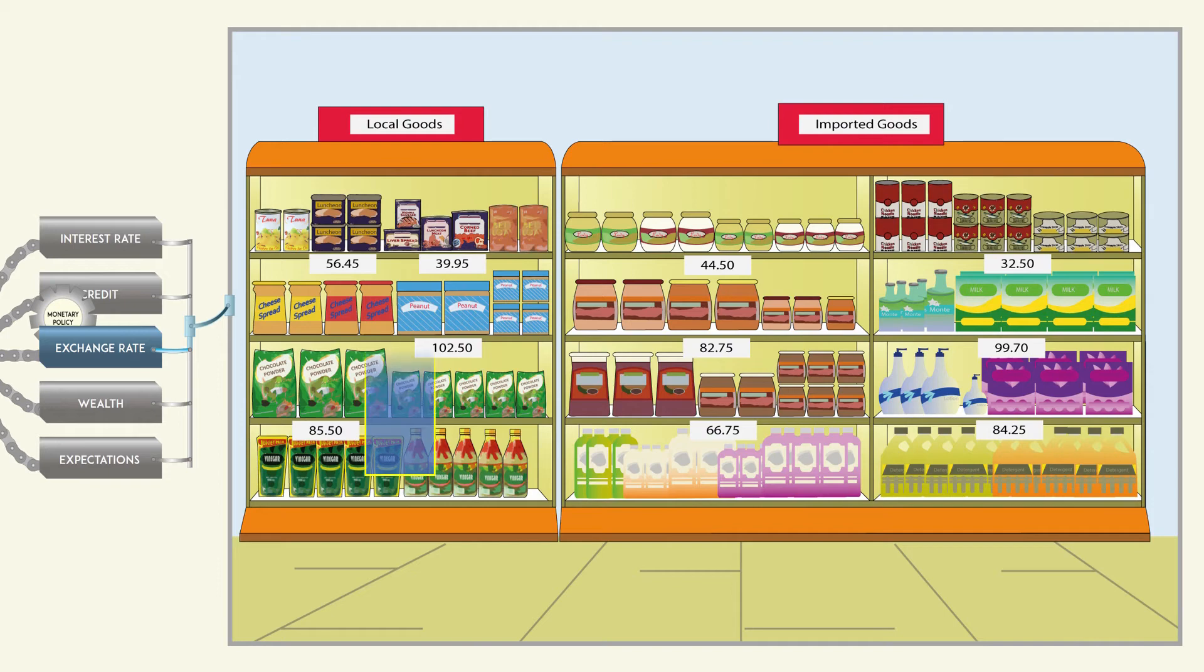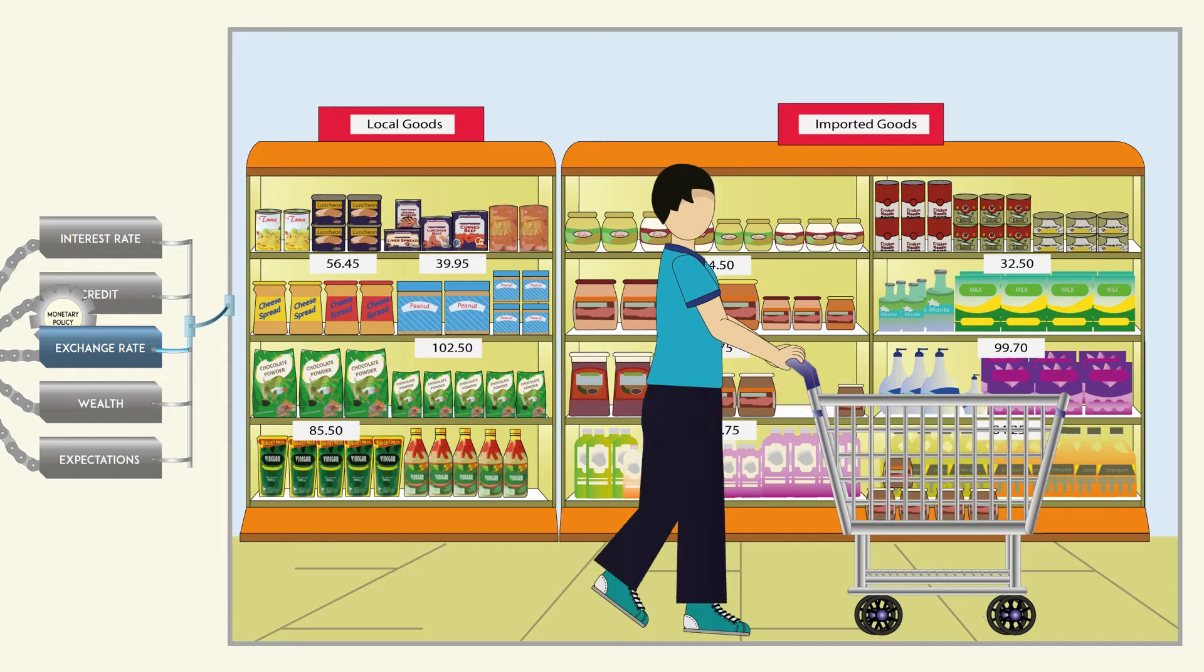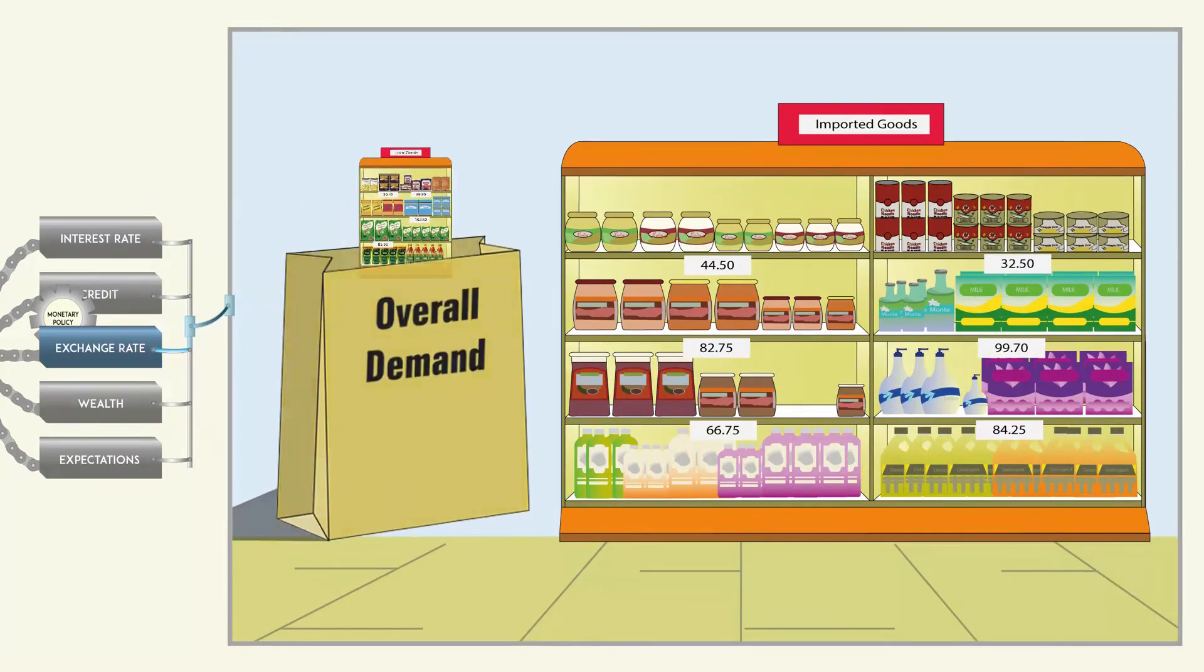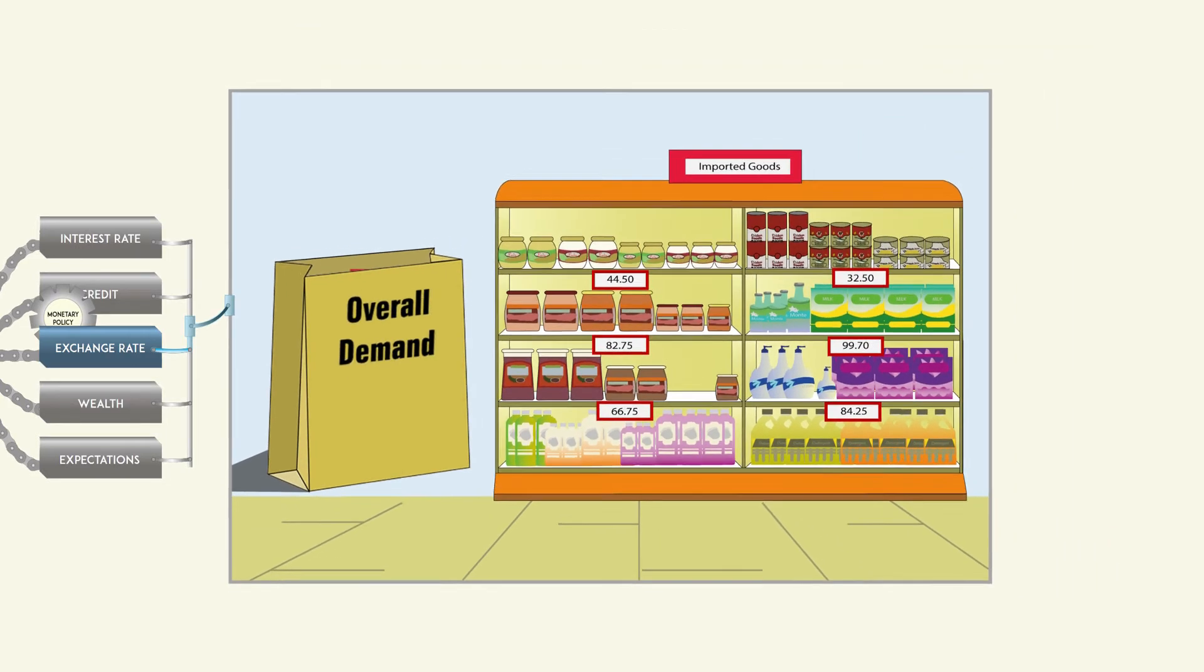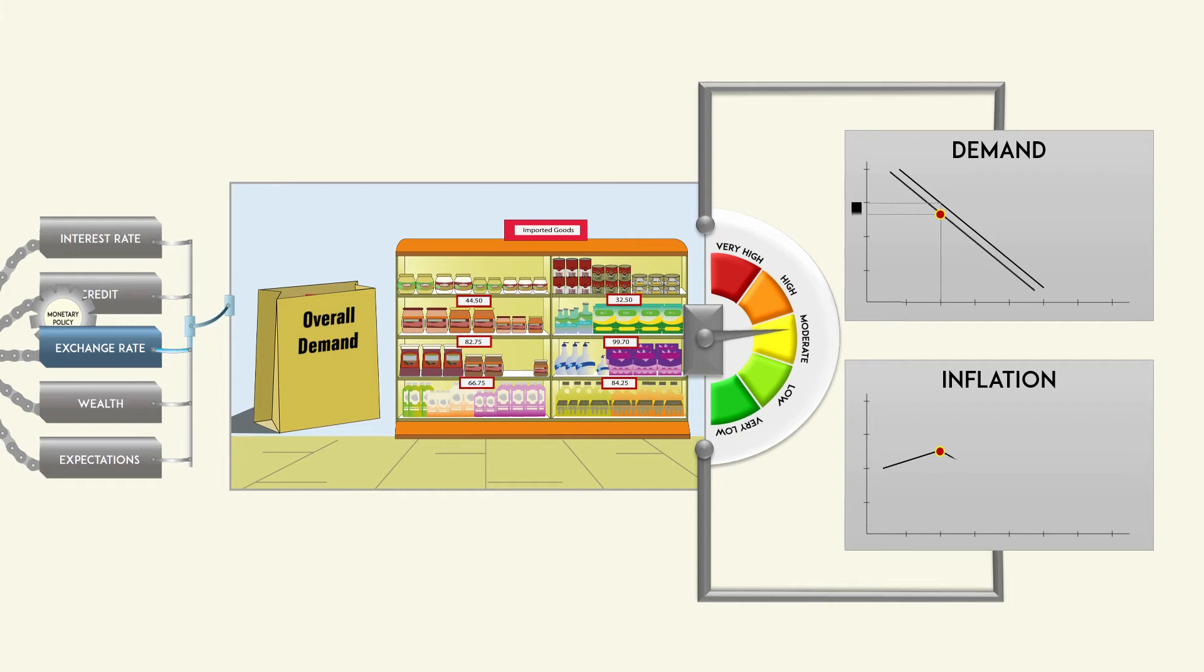A strong peso makes domestic goods more expensive than foreign goods, thus slowing demand for goods produced locally. The decline in the overall level of demand for goods produced in the Philippines and cheaper imported goods due to peso appreciation will moderate inflation.